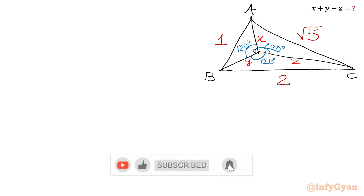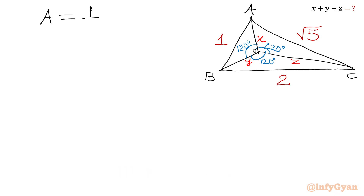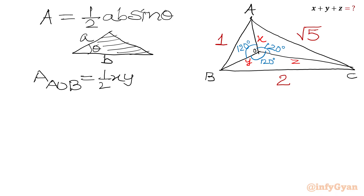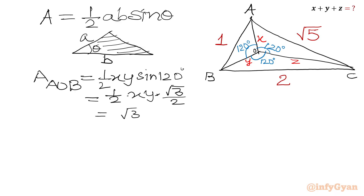Now we will talk about area. The area of a triangle with sides a, b and included angle θ is half·ab·sinθ. Using this formula, the area of triangle AOB equals (1/2)·x·y·sin(120°) = (1/2)·x·y·(√3/2) = (√3/4)·xy.